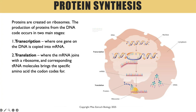Let's get into protein synthesis. Proteins are synthesized on the ribosomes and the production of proteins from DNA is a two-stage process. We start in the nucleus where transcription occurs — this is where one of the genes on the DNA is copied into mRNA. Step two is translation, which happens on ribosomes in the cytoplasm or on ribosomes on the rough endoplasmic reticulum, where the mRNA joins a ribosome and corresponding tRNA molecules bring specific amino acids, matching the anticodon to the codon.